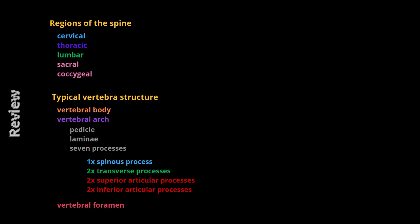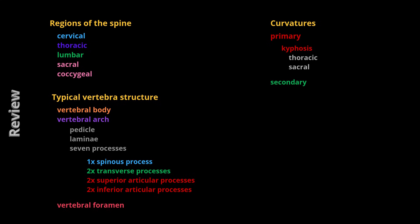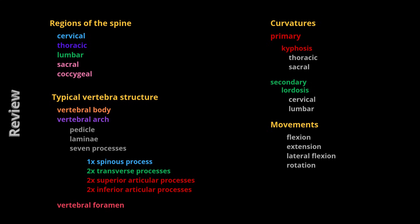We then examined the spine as a whole and evaluated its curvatures. Primary curvatures include thoracic and sacral kyphosis, which occur during embryonic development. Secondary curves include cervical and lumbar lordosis, which form in the later stages of fetal development. Movements of the spine include flexion, extension, lateral flexion, and rotation, facilitated by the muscles and ligaments of the back and the anterolateral abdominal wall muscles.